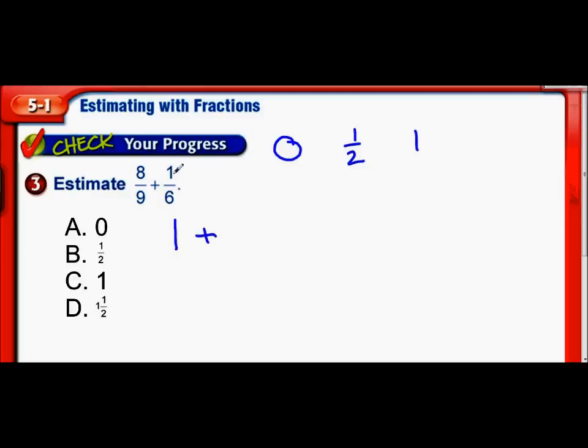Plus, now 1 sixth. 1 sixth is just the opposite. 1 is not very much of 6. It's the smallest fraction of 6 you can do. So 1 sixth, I'm just going to round that all the way to 0. We finish by adding 1 plus 0, and of course that's 1. So 8 ninths plus 1 sixth is going to be pretty darn close to 1.